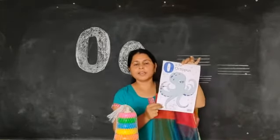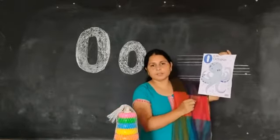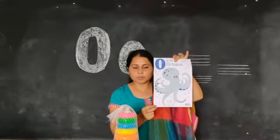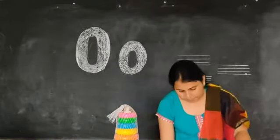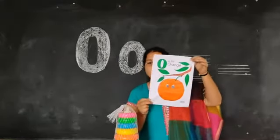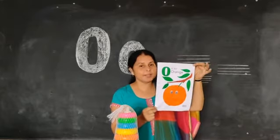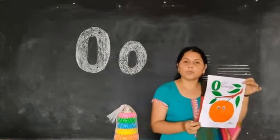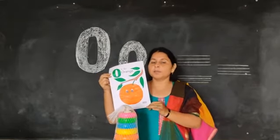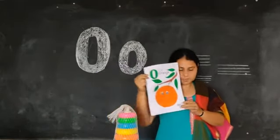This is the first one. Now, let's see. All of these are all of these. This is all of these. Orange. What is this? Orange. Now, let me see. What is this?